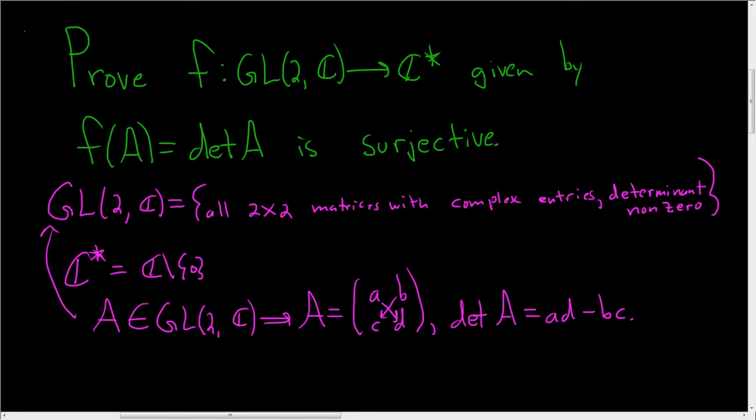So we have to prove that this function is surjective, right? So given a non-zero complex number, we have to find a matrix whose determinant is equal to that complex number.